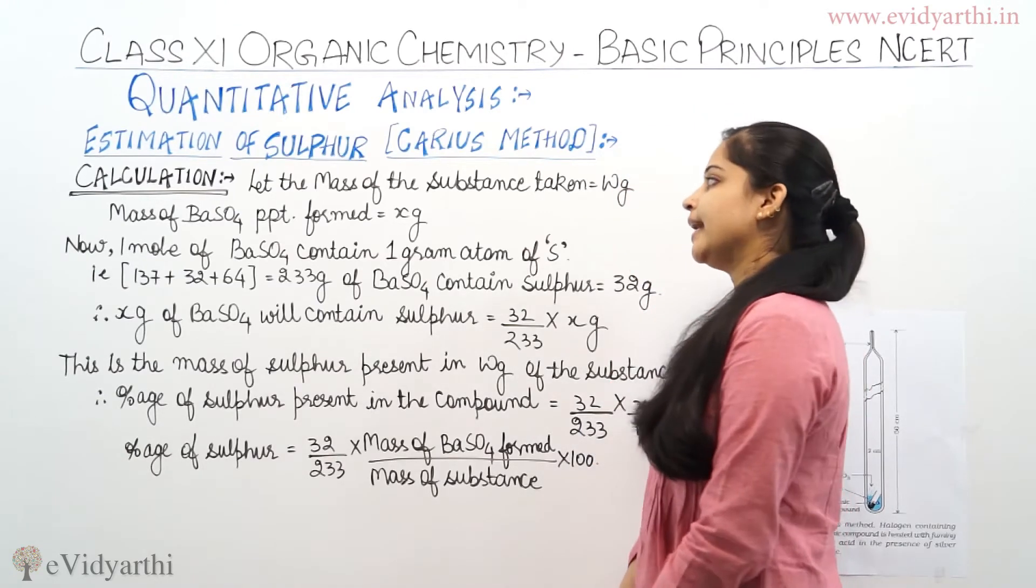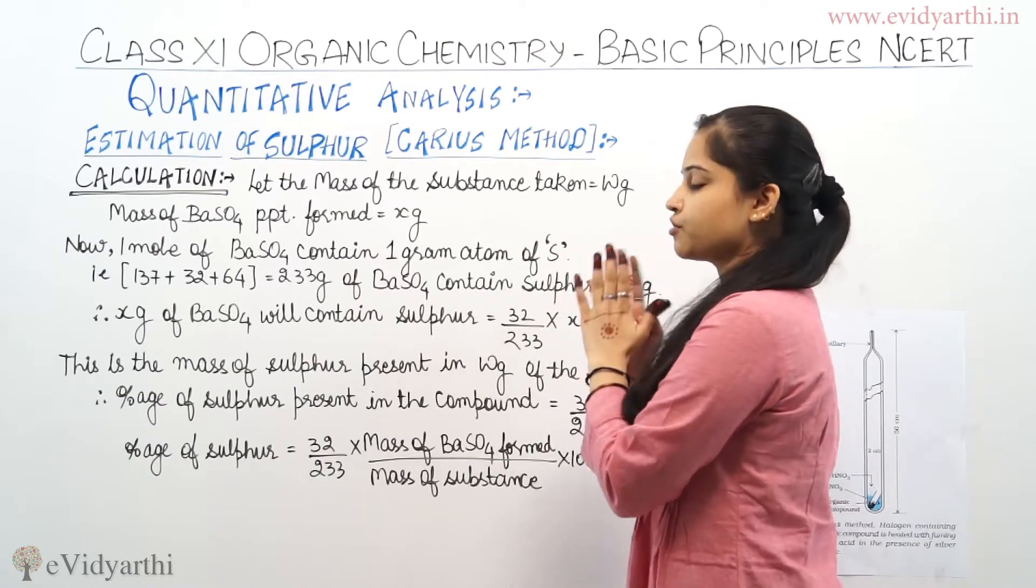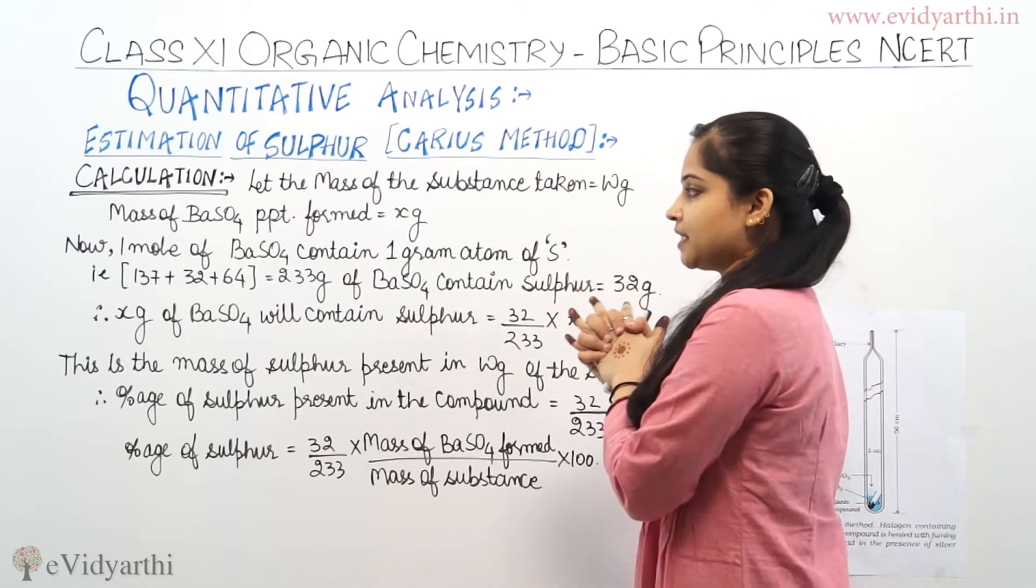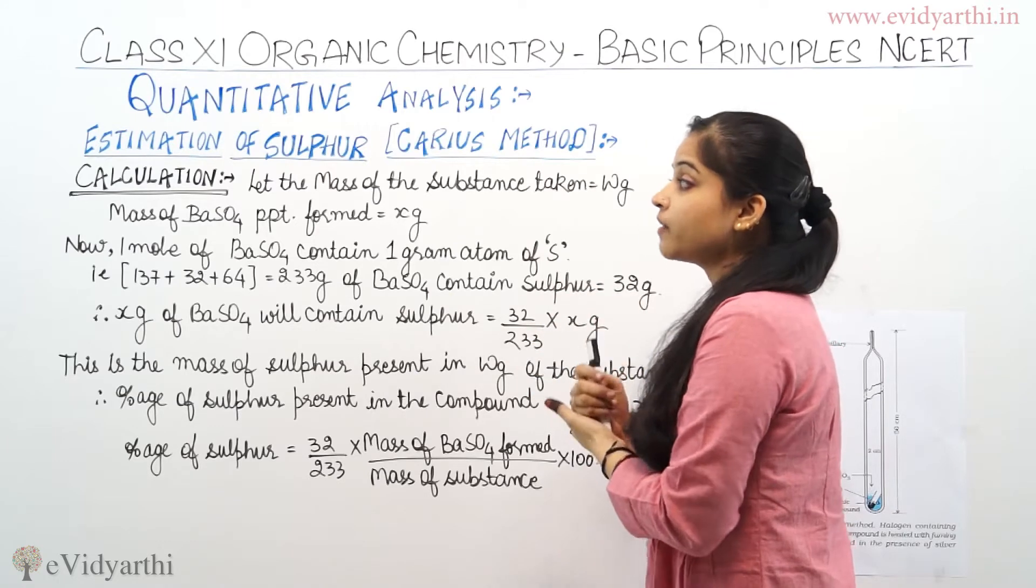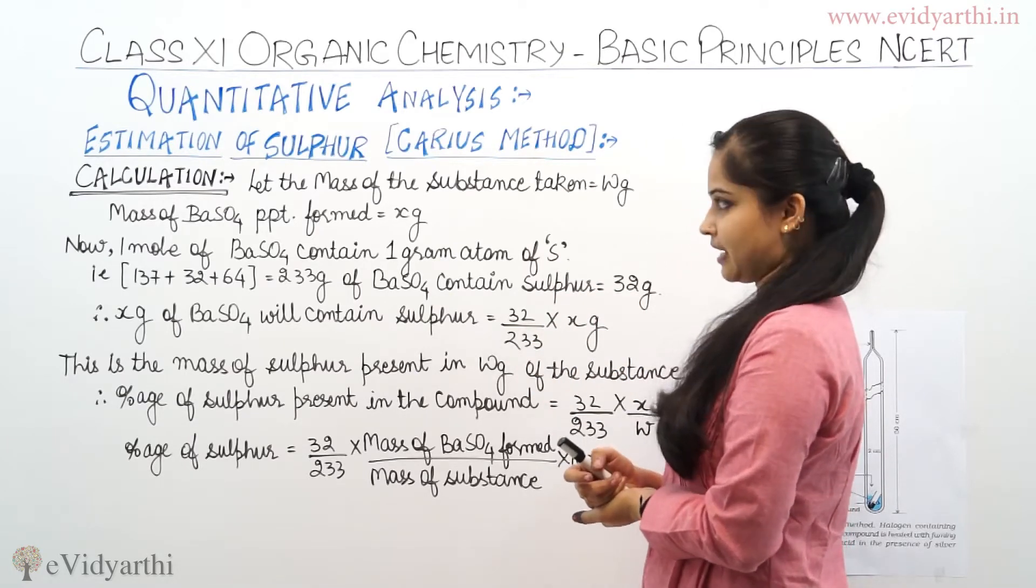So, calculations. Let the mass of substance taken equal W grams. Mass of BaSO4 precipitated, that means mass of BaSO4 formed, is equal to x grams.